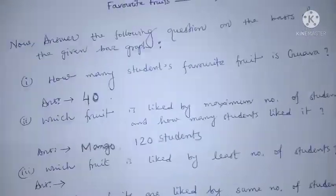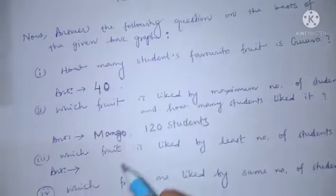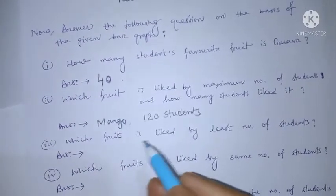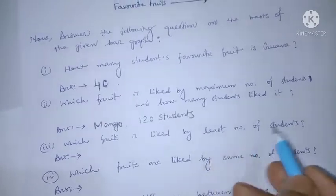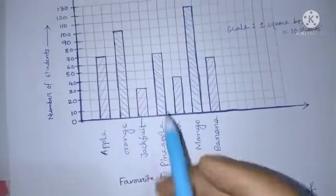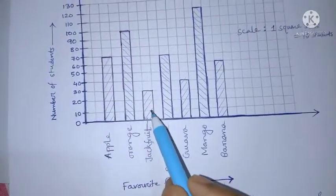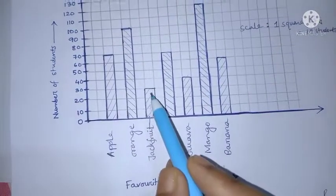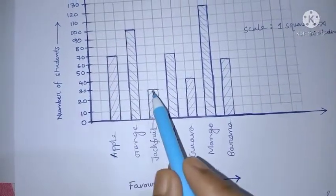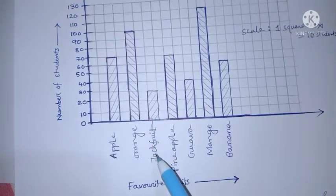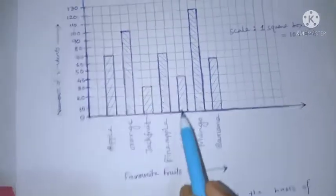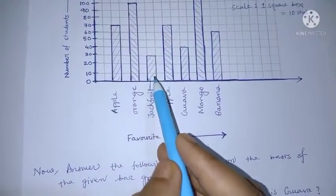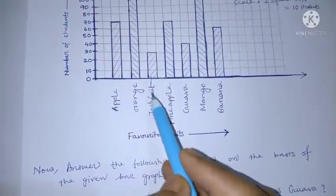Which fruit is liked by the least number of students? We have to find the minimum height — that is 30. So the minimum number of students like jackfruit, and the number is 30.